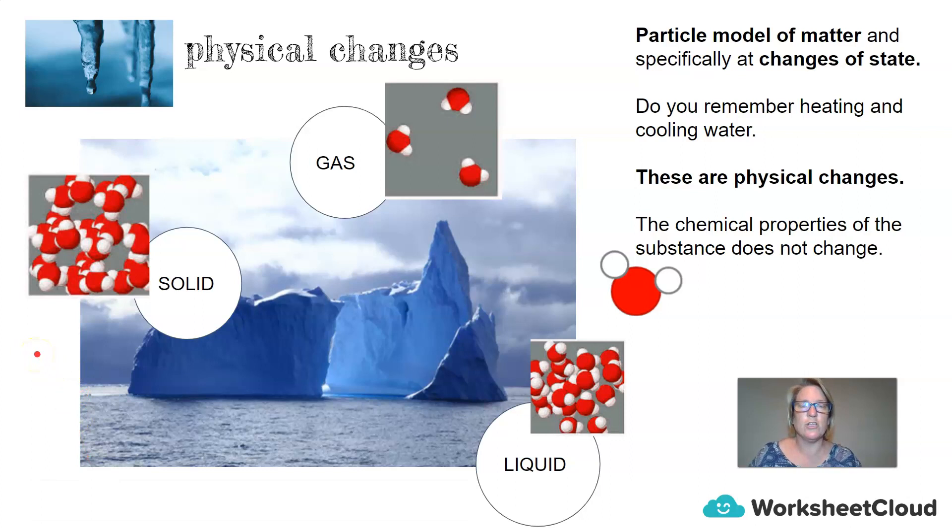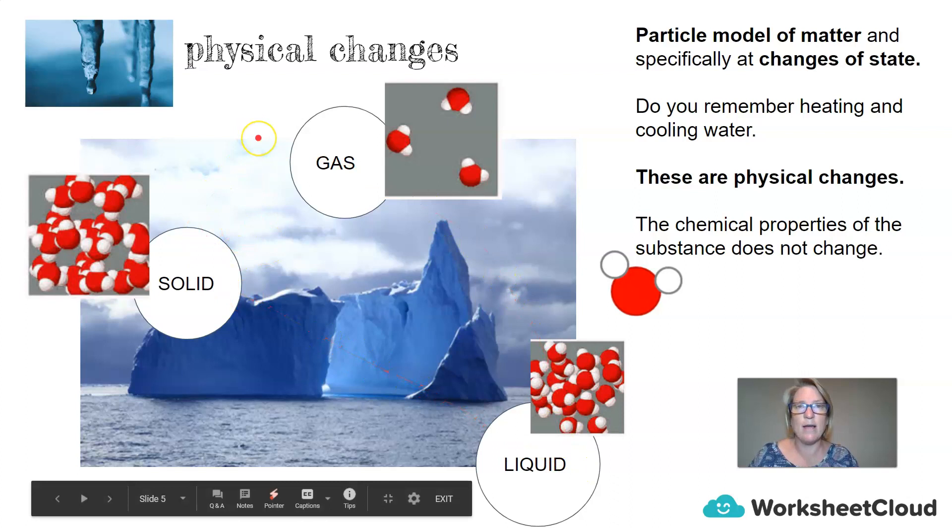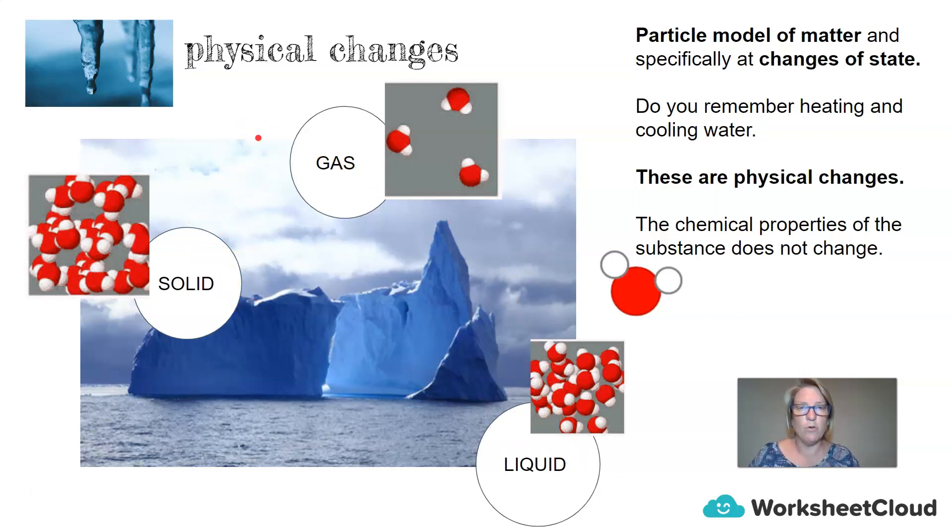So before we get on to the answers, I want to cover what are physical changes. In previous lessons, we've covered the particle model of matter and specifically what happens when we change states. And we also had a look at what happens when we heat water and what happens when we cool water. So here is an example in the top corner here we have of an icicle that's solid that is melting. There's a droplet of water there that's a liquid. So we are having a look at a change of state going from a solid to a liquid.